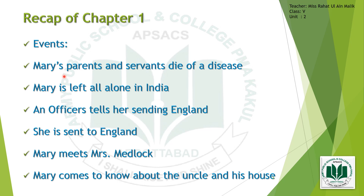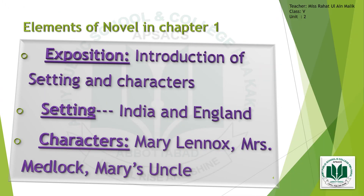If you could get back to the first lesson, our first lecture, you would see that I had talked about the elements of the novel. The elements of the novel identified in chapter number one are as follows. First of all there is exposition — the very start of the novel. In exposition we talked about the introduction of setting and characters. In chapter number one, the setting we have come to know about is India and England. The very first event took place in India and the second one in England.